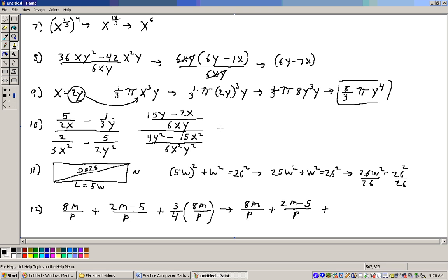Now, when you're dividing, it's the same as multiplying by the reciprocal of this right here. So here we have 15y minus 2x over 6xy times, flip this. It will be 6x²y² over 4y² minus 15x².